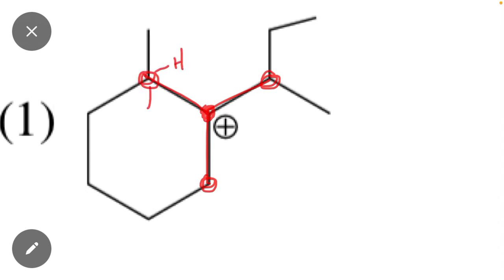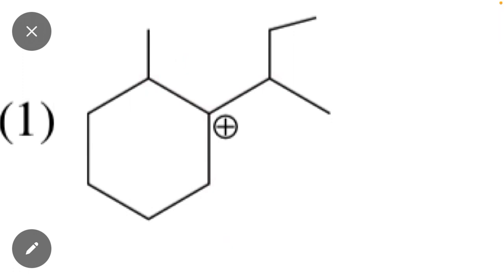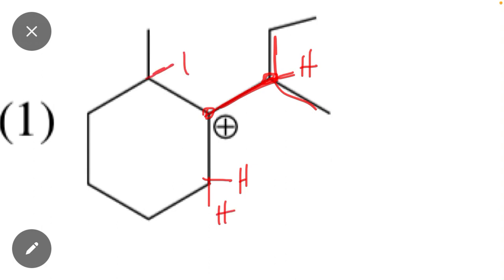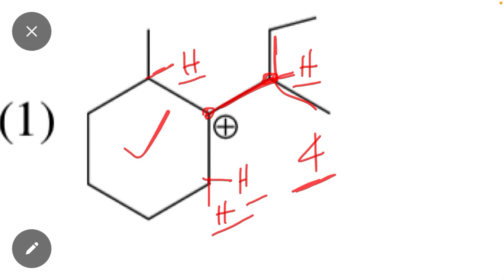How many hydrogens does each of these directly attached carbons have? For example, if we check this carbon directly attached here, just one hydrogen is attached because all four bonds are complete. If we check this carbon, there are two hydrogens attached. Similarly, this carbon has only one hydrogen. So total hydrogen is one, two, three — four hydrogens are attached to this carbocation.